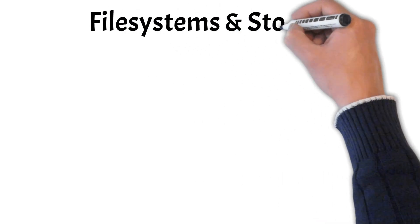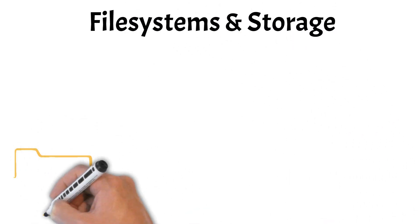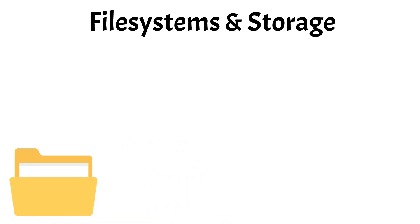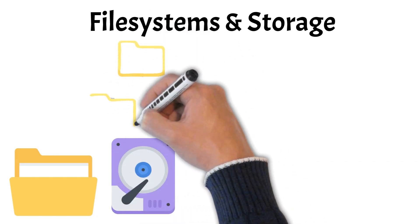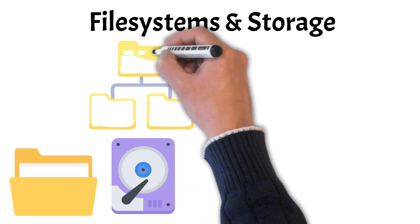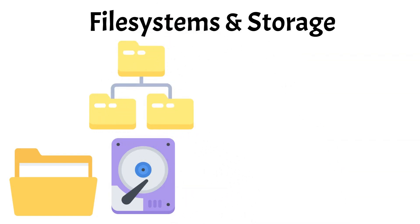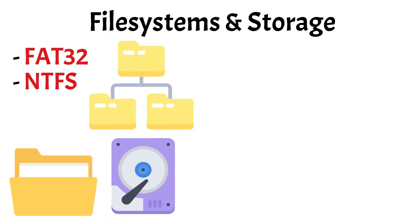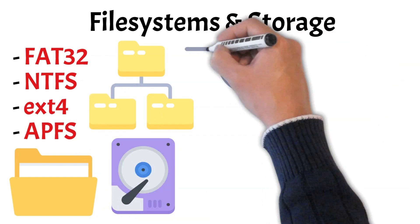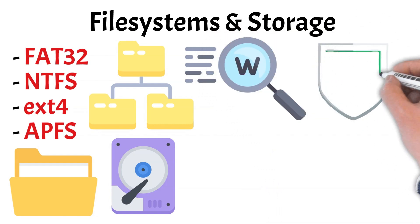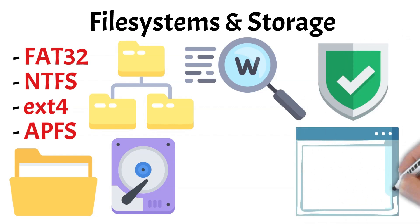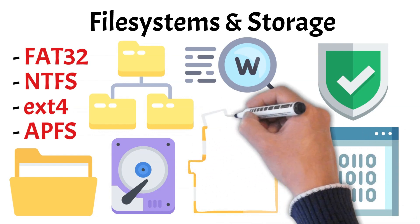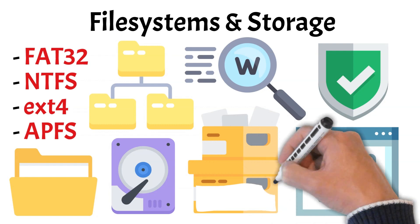Next, let's explore how operating systems handle data through file systems and storage. A file system is the method an OS uses to organize and manage data on storage devices like hard drives, SSDs, or flash drives. It determines how files are named, stored, retrieved, and structured into directories and subdirectories. Common file systems include FAT32, NTFS, EXT4, and APFS, each with its own rules and capabilities. The OS uses the file system to keep track of file locations, permissions, and metadata, ensuring quick access and data integrity. Without it, stored data would just be raw, unreadable bytes. Efficient storage management is essential for performance, reliability, and user experience.